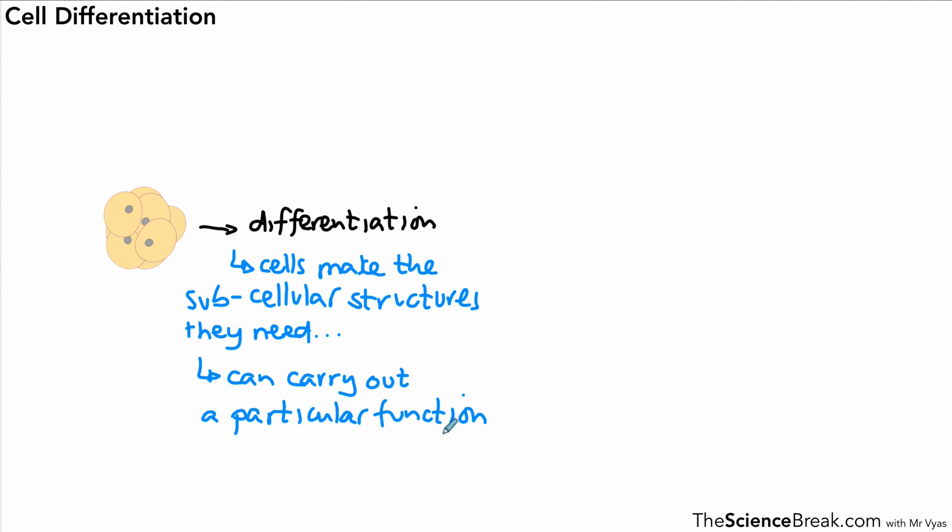Once they have the subcellular structures they need and the structure they need, they can carry out a particular function for the body. We say the cells have now become specialized.